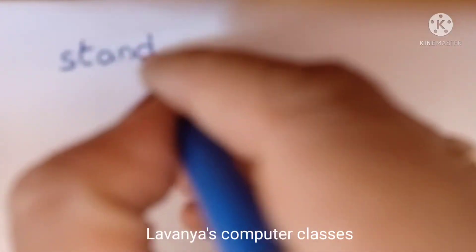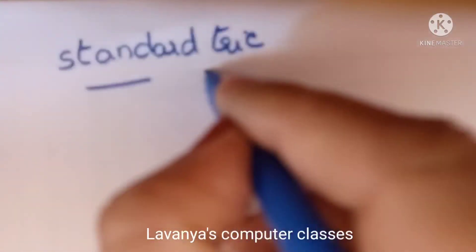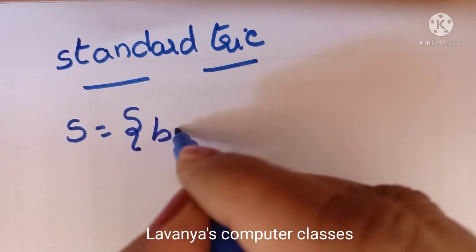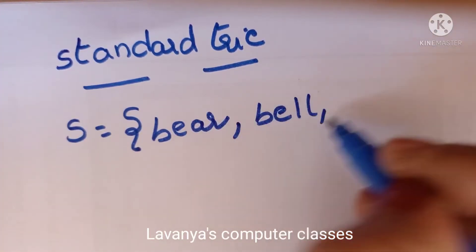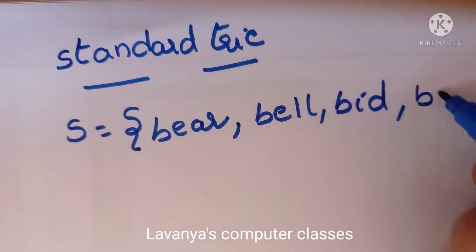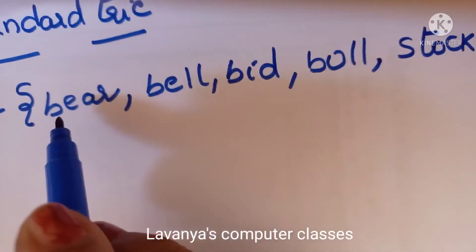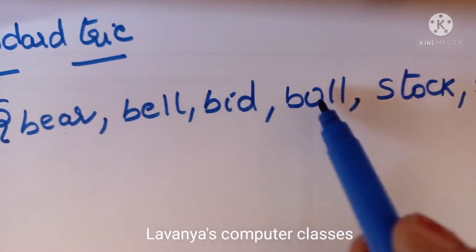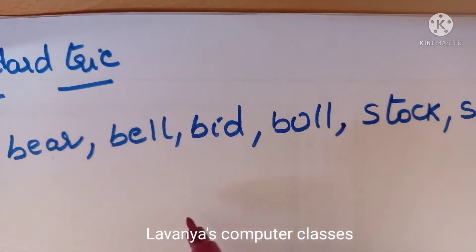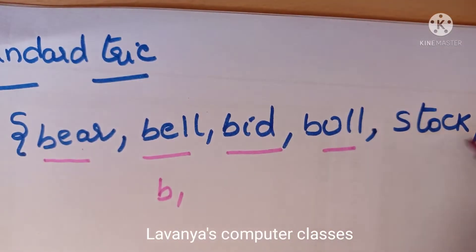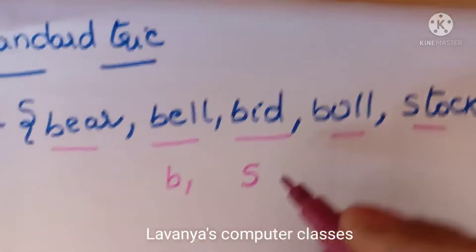First example — standard trie. For a set of strings S, we have 6 strings: bear, bell, bid, bull, stock, stop. Among these, 4 strings start with B and 2 strings start with S. So we have 2 starting alphabets: B and S.